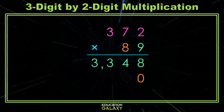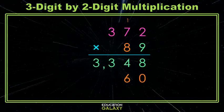So 2 times 8 is 16, carry the 1. 7 times 8 is 56, plus the 1 we carried is 57, carry the 5. 3 times 8 is 24, plus the 5 we carried is 29. And if you want to keep things tidy, here's your comma.